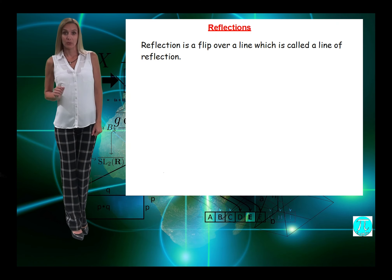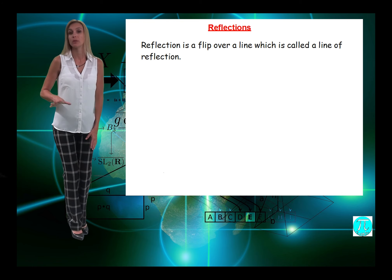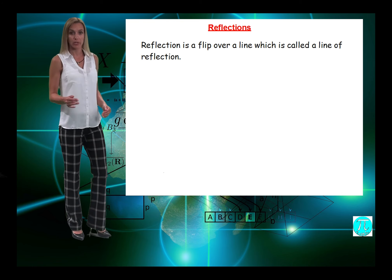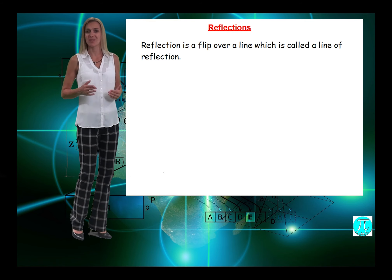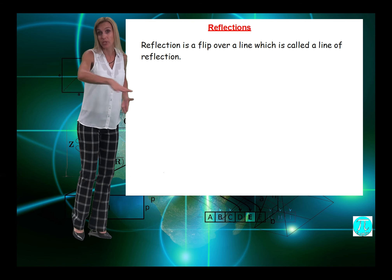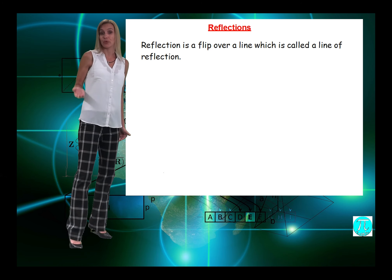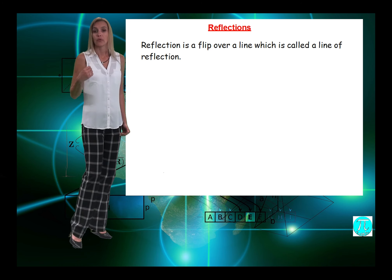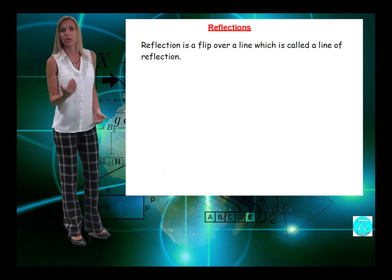What we're going to be dealing with are some reflections. What is a reflection? A reflection we can also call it sometimes a flip. And when we flip something, we usually flip it over a line of reflection. The line of reflection is basically kind of like our mirror.